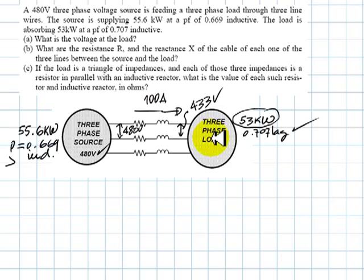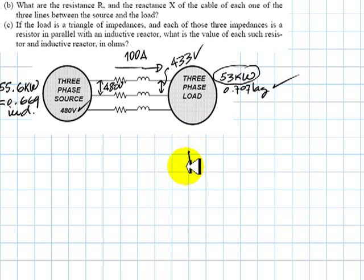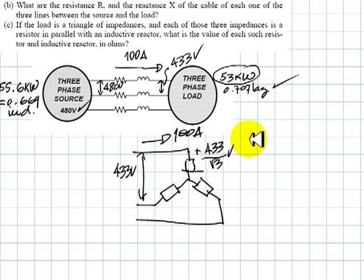Let me begin by assuming that this load actually is connected in a Y with three equally sized impedances. The voltage here we determined was 433 volts. That means that this voltage here is 433 divided by root 3, and the current here is 100 amps, we obtained that before, so we can compute the value of this impedance.